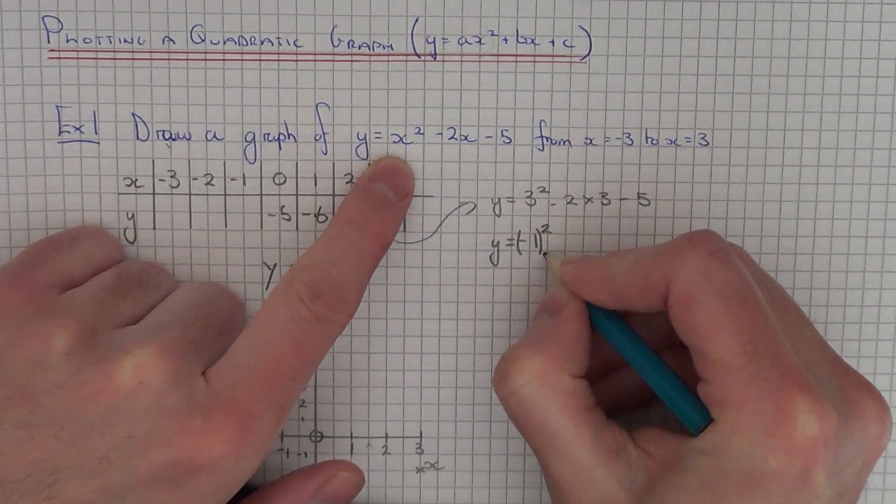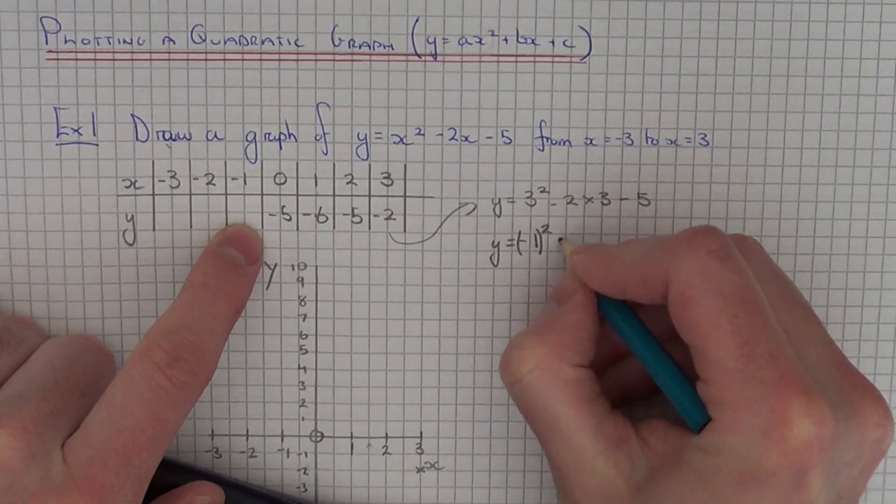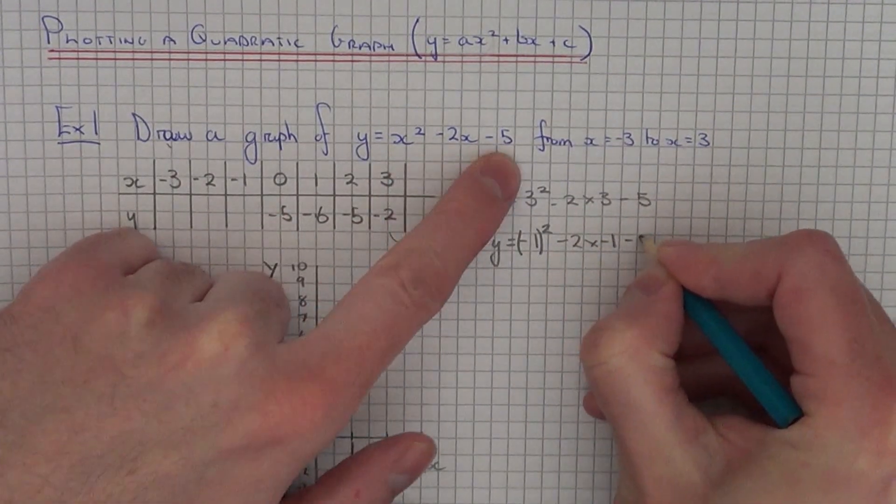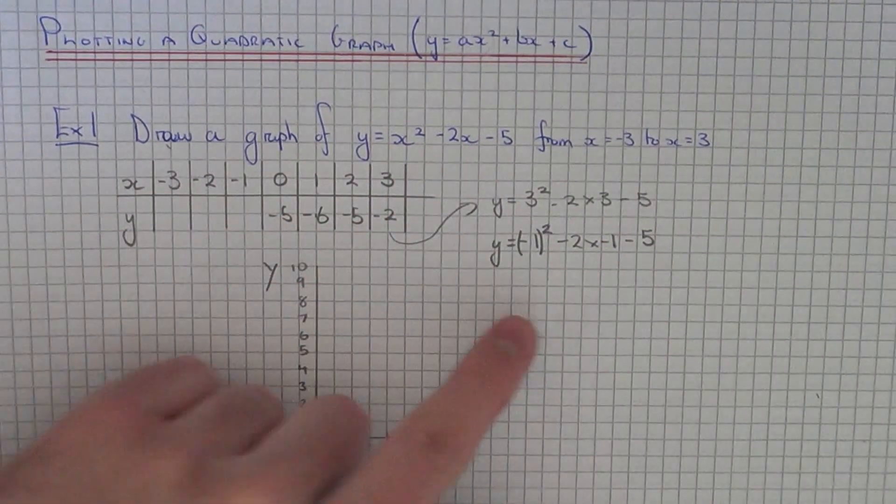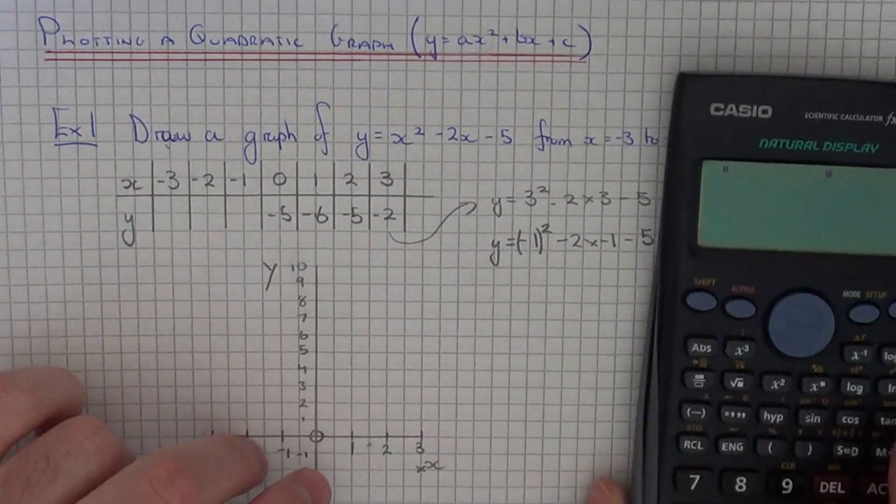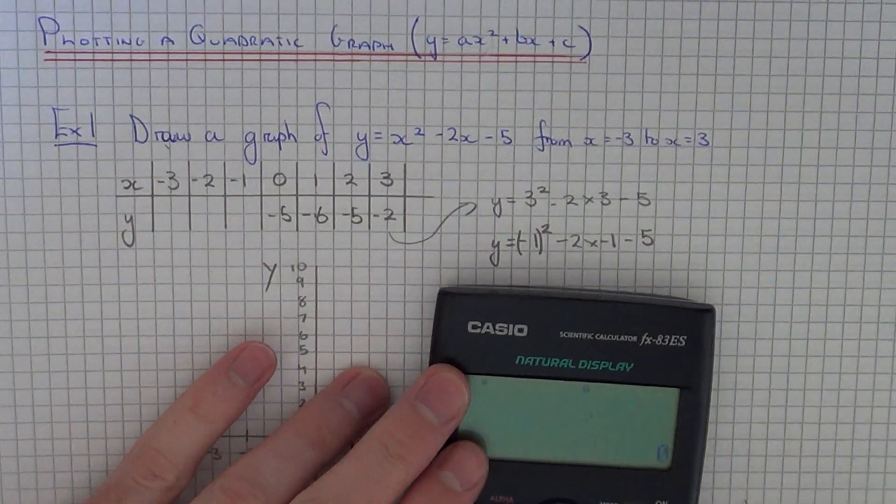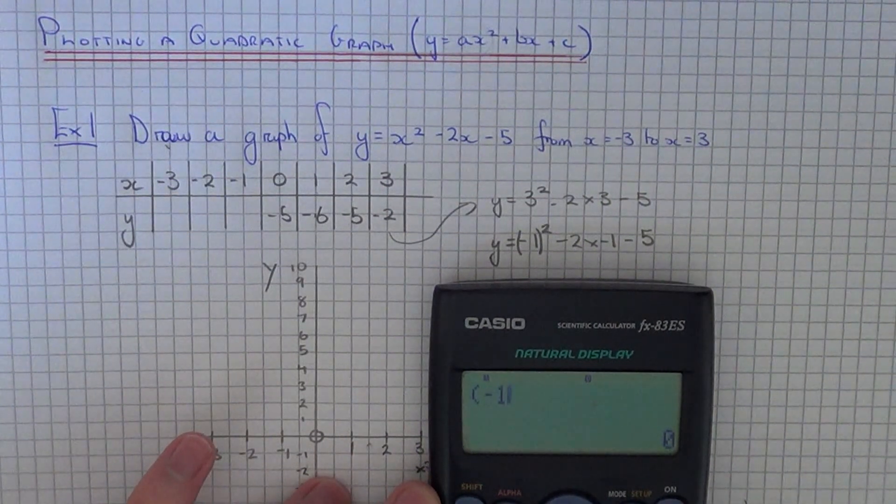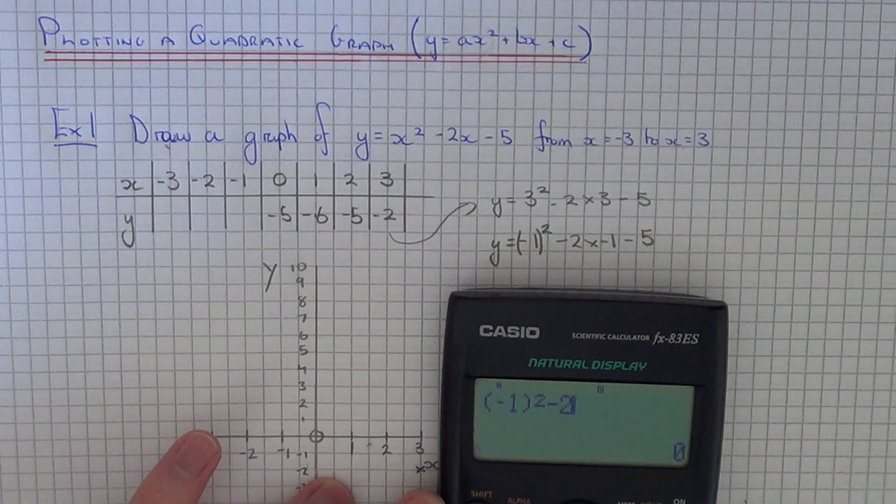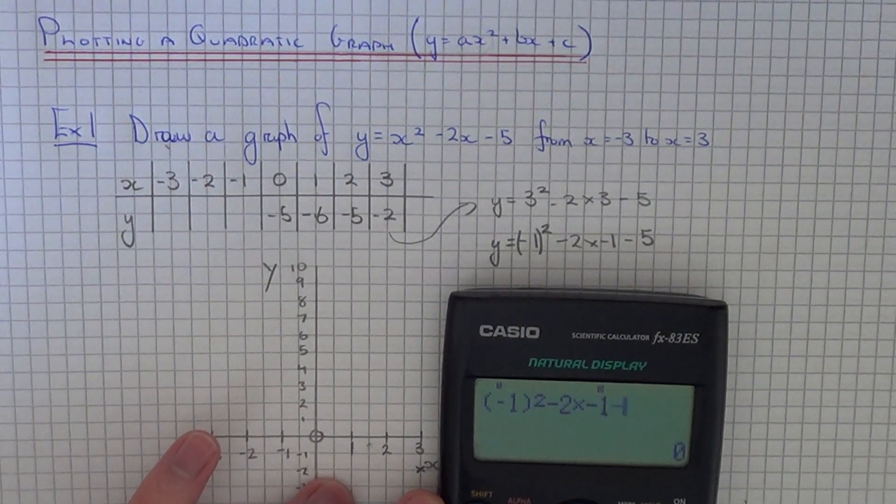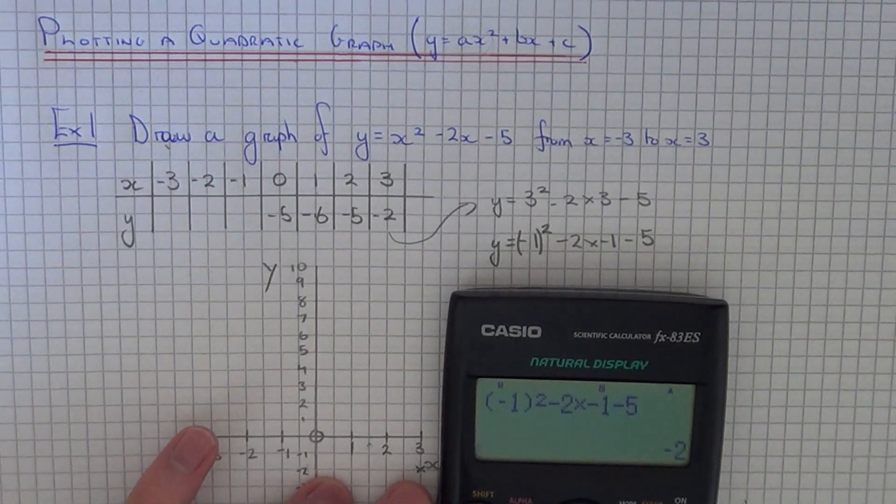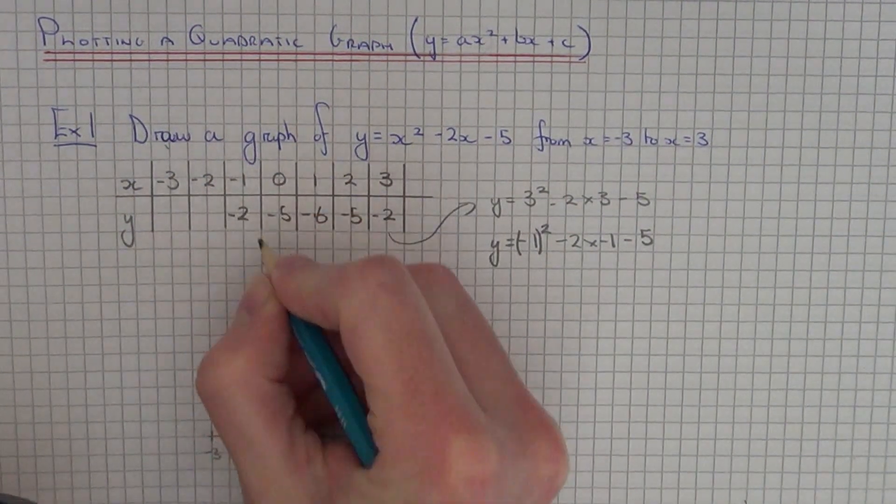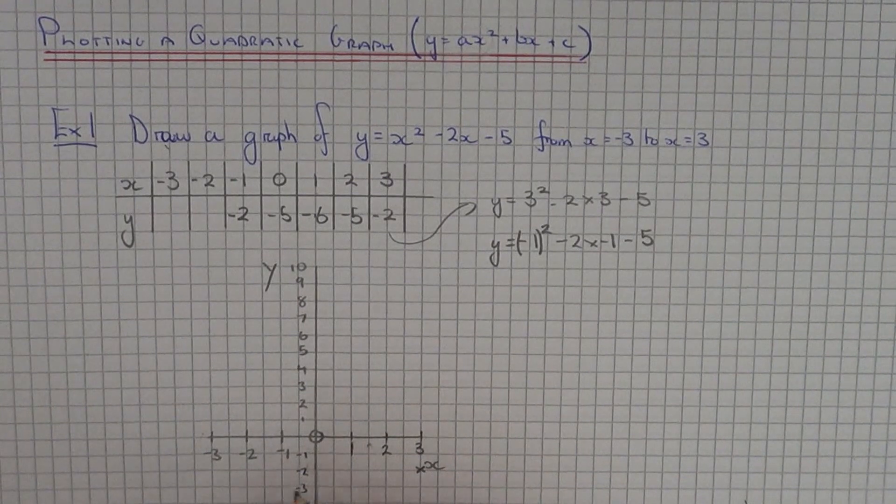So you have to put a bracket in when you type it in on your calculator. So then you've got minus 2 times minus 1 take away 5. So if you type it in like that on the page, so it would be minus 1 squared minus 2 times minus 1 take away 5. And that gives you minus 2. So our next point is minus 1 minus 2.